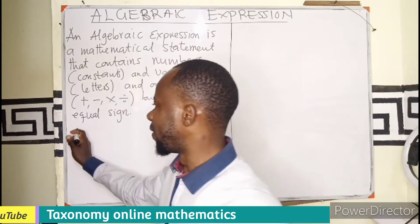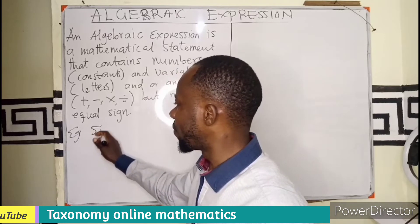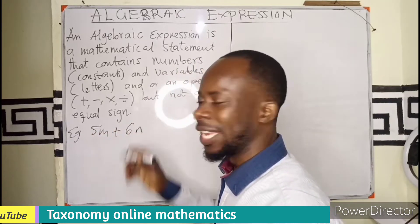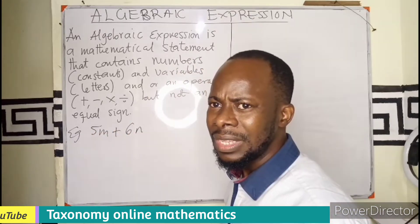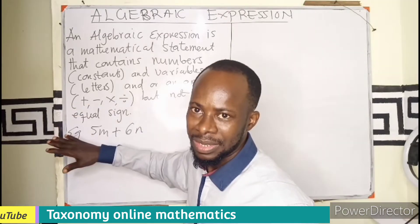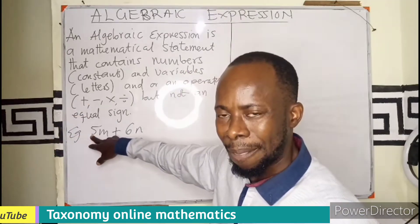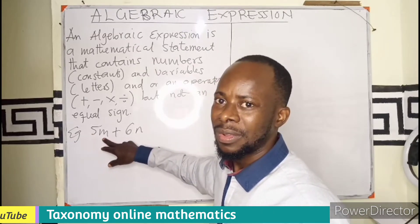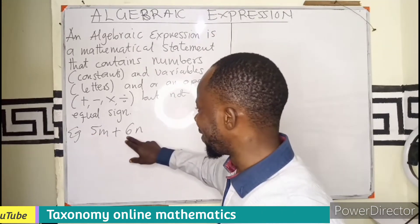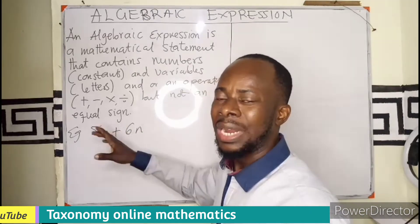For example, if I have 5M plus 6N, this statement here is a mathematical statement which consists of a number and a variable. So this is a number, this is a variable, and this is a number, this is a variable, and this is an operator.